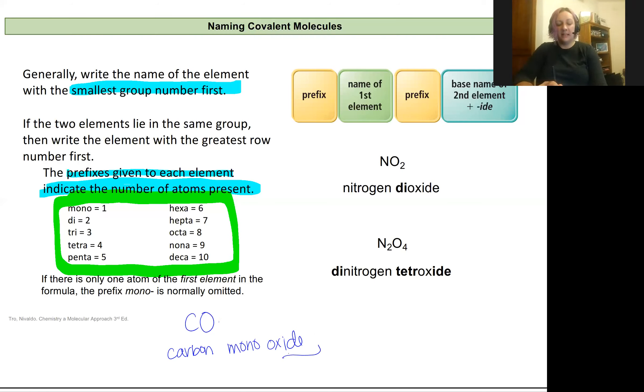This IDE is another thing to raise. The second element that's written will have that IDE ending that we had for the anion in ionic bonding. It doesn't mean it has a negative charge. We would recognize that because we would see the naming structure tell us it was a covalent molecule rather than an ionic molecule with the inclusion of the prefixes, and also the lack of a metal typically.